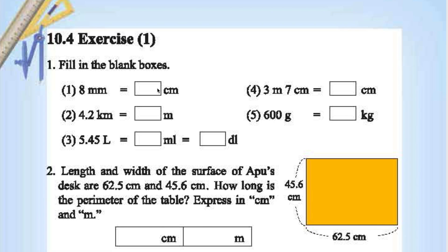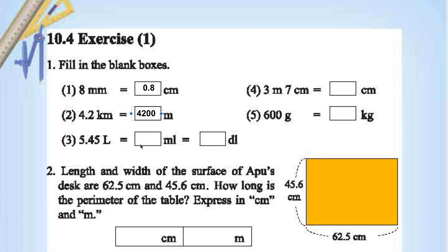8 mm is 0.1 cm, so its value will be 0.8 cm. 4.2 km: kilo is 1000, so 4.2 × 1000 is 4200 meters. 5.4 ml in milliliters, 5450 ml in deciliters is 54.5 deciliters.